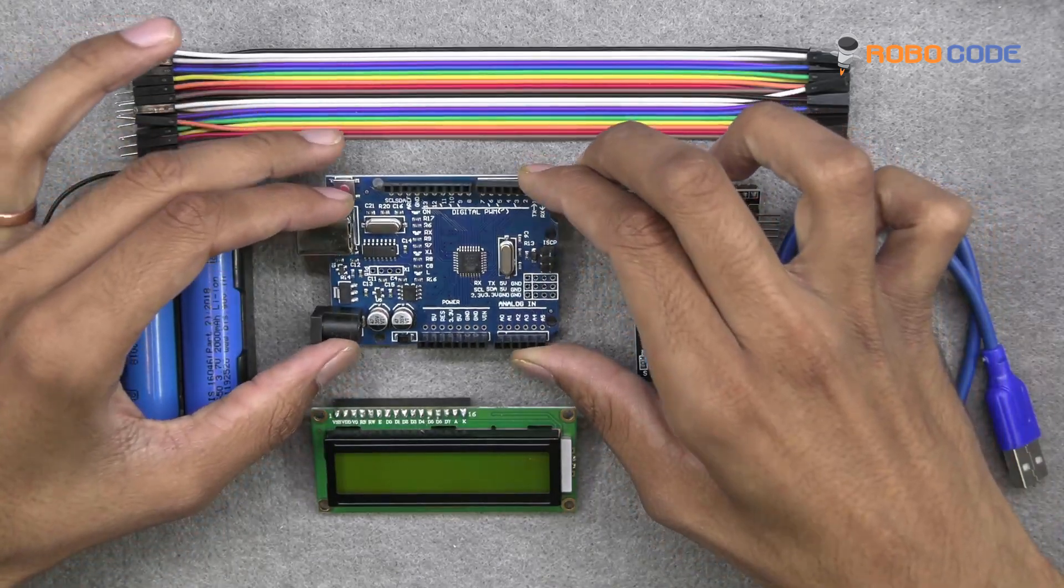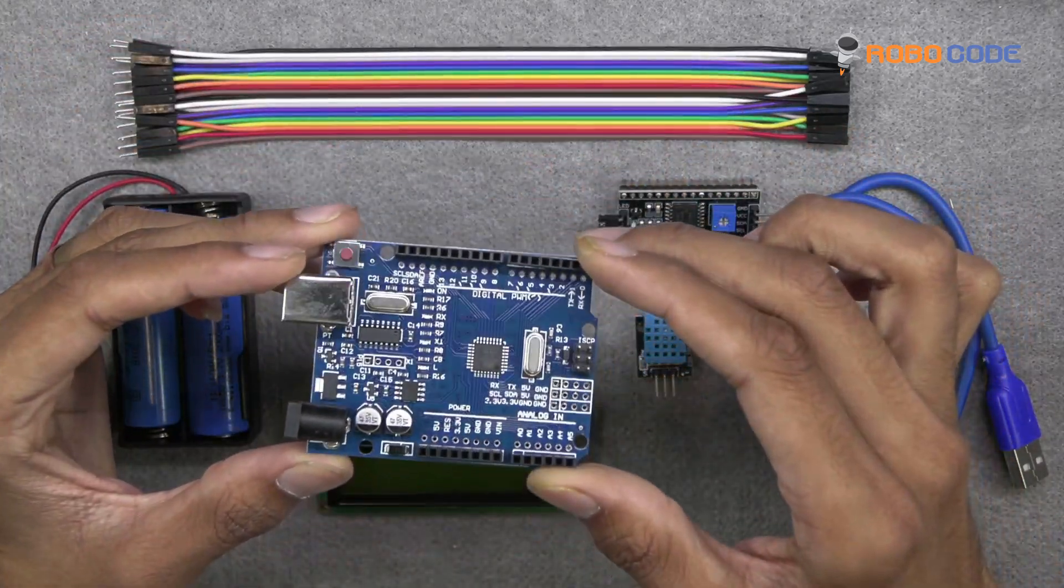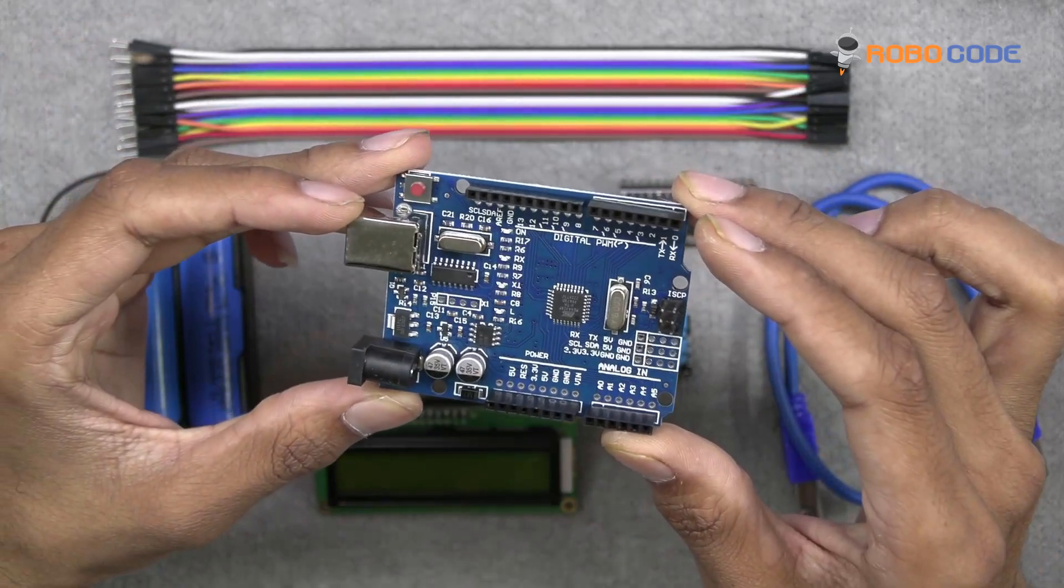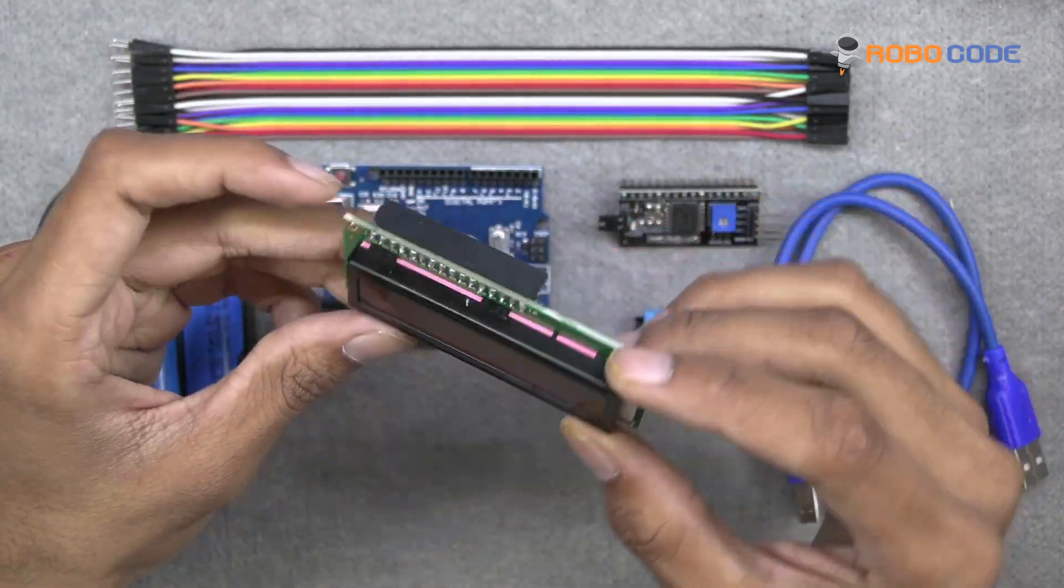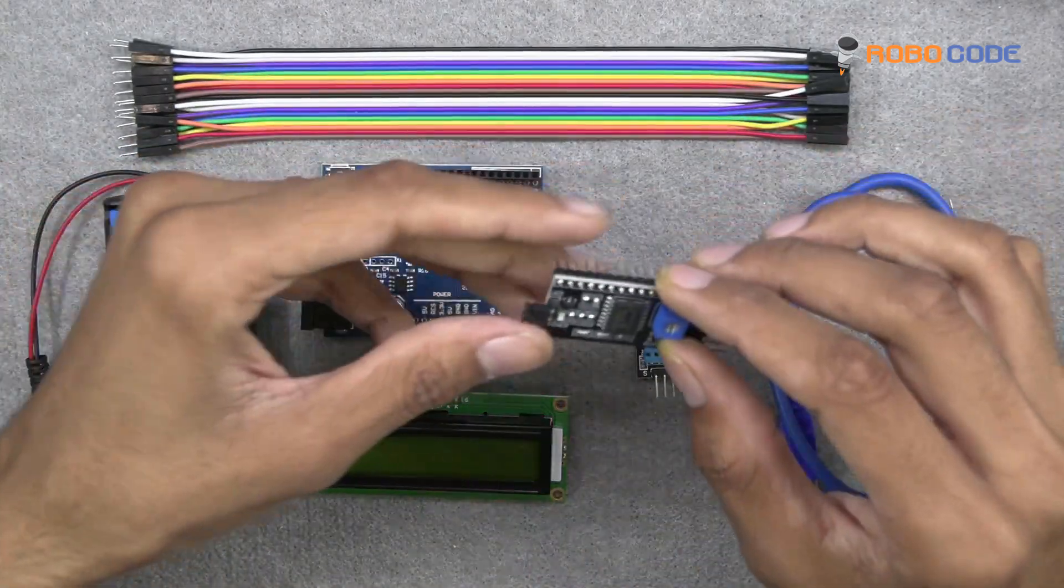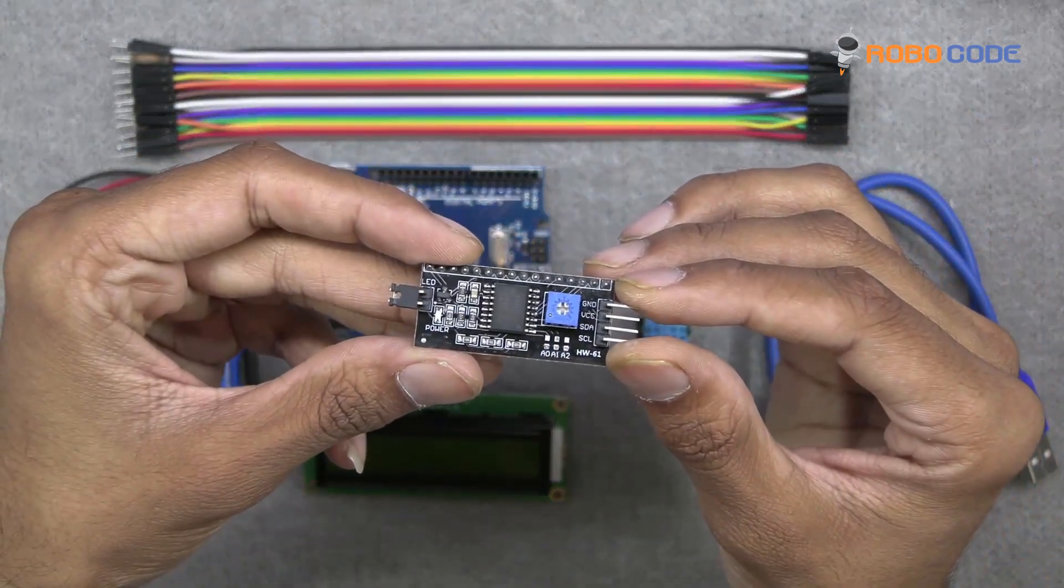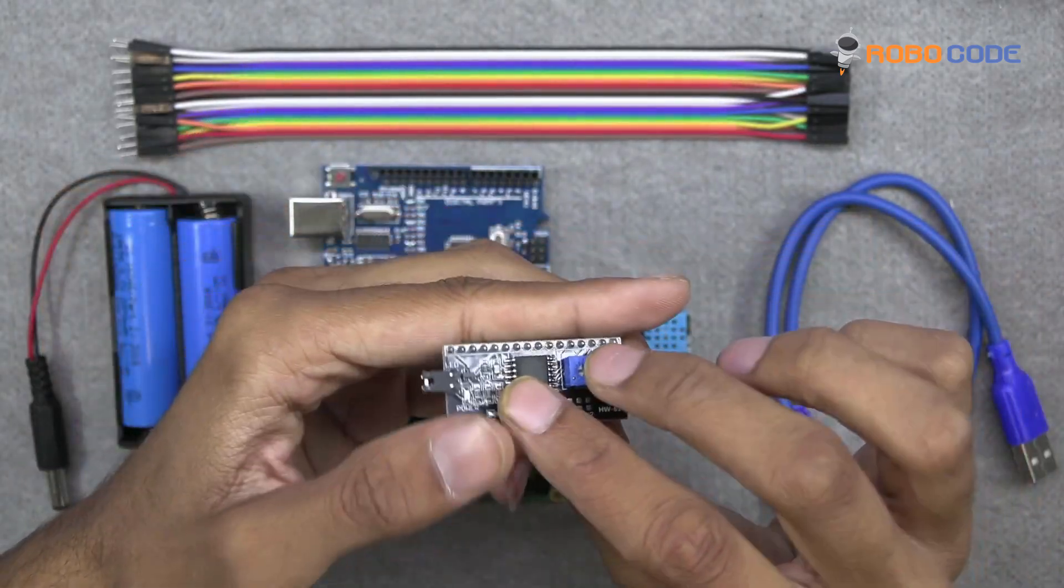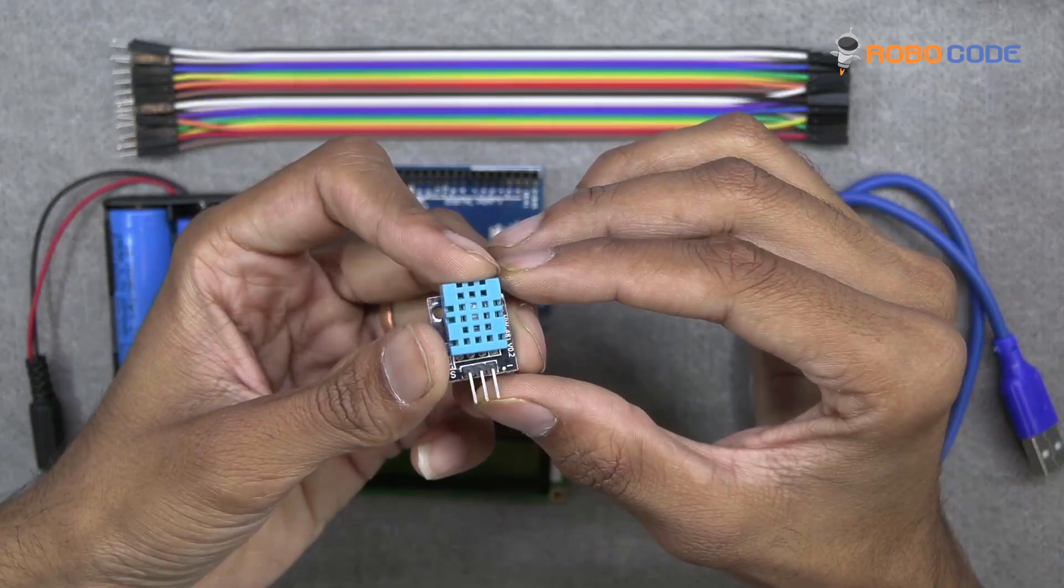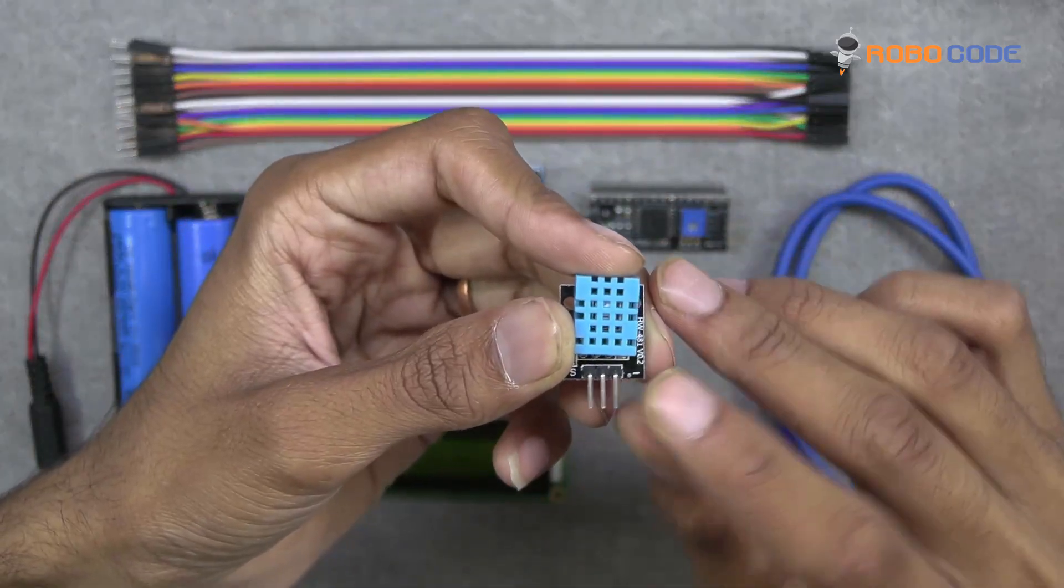We will select the Arduino UNO board as you can see in this video, one 16x2 LCD display, one I2C display module which we need to connect to the 16x2 LCD display, and one humidity sensor which is DHT11.